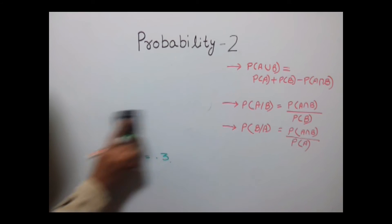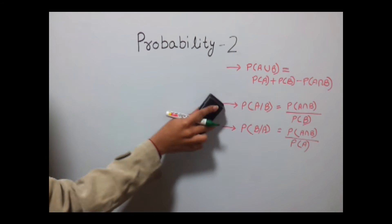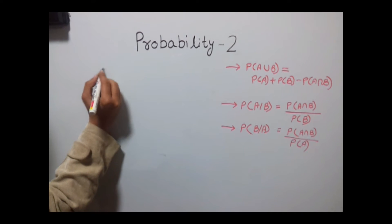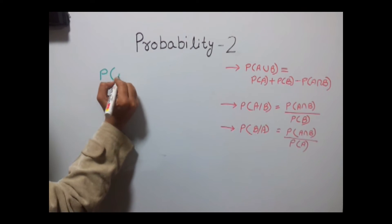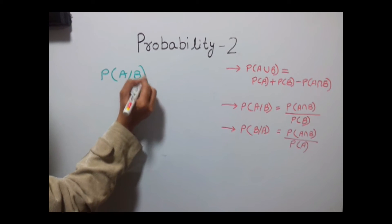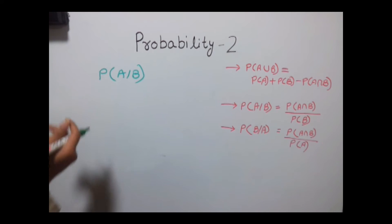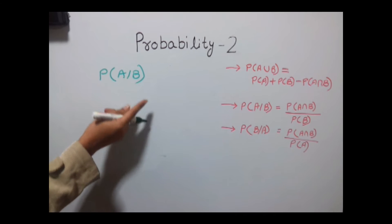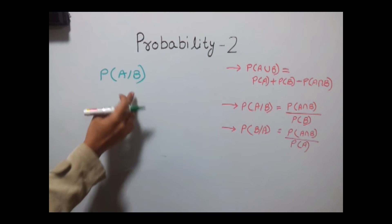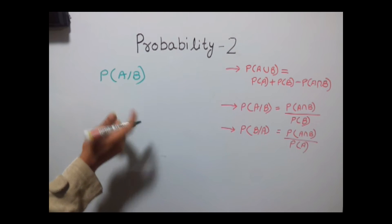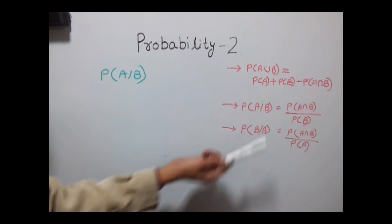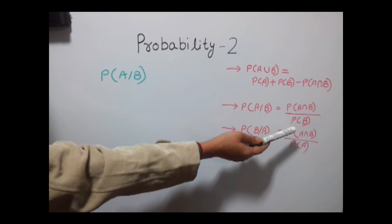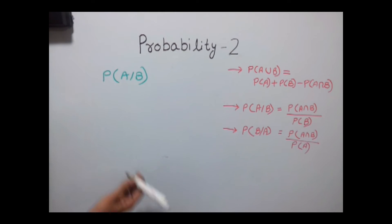Let's discuss another aspect of probability — probability of A given B. This means that event A will take place when event B has already taken place. The formula for this is: probability of A given B equals probability of A intersection B divided by probability of B.